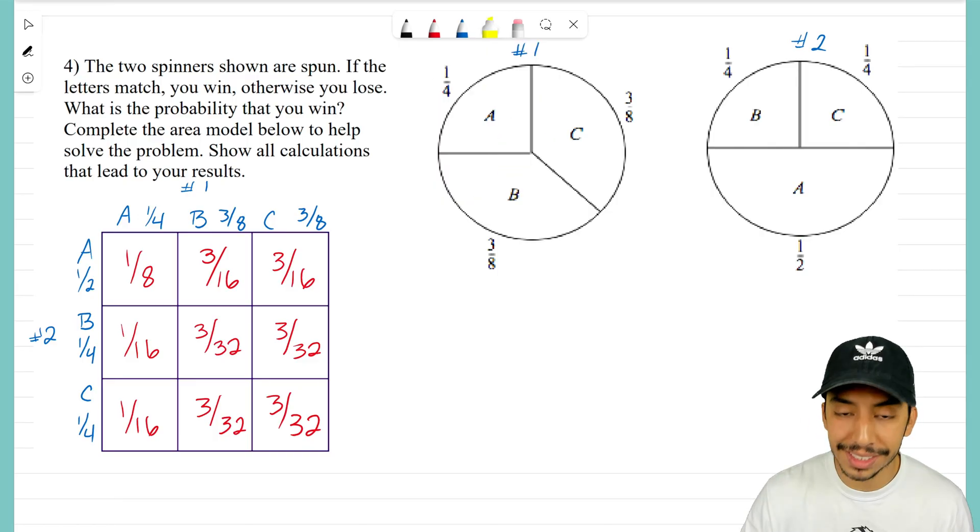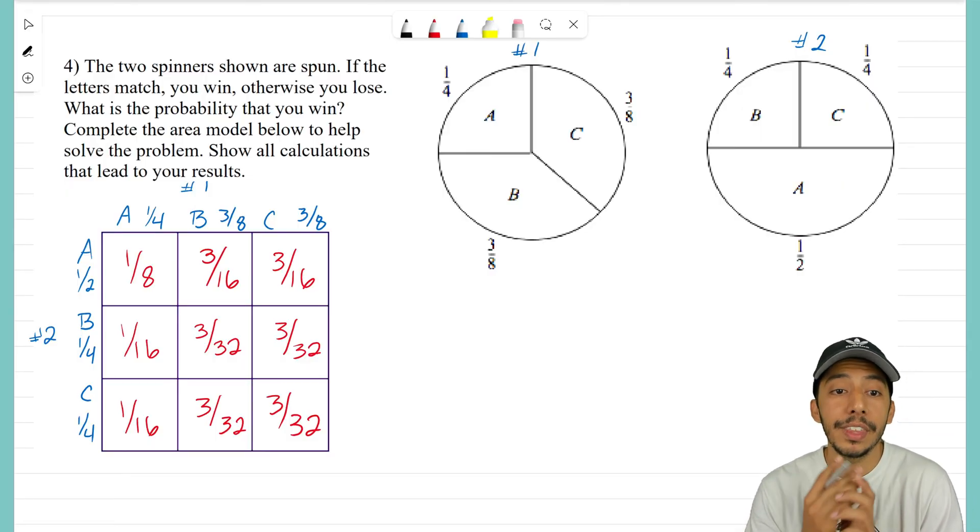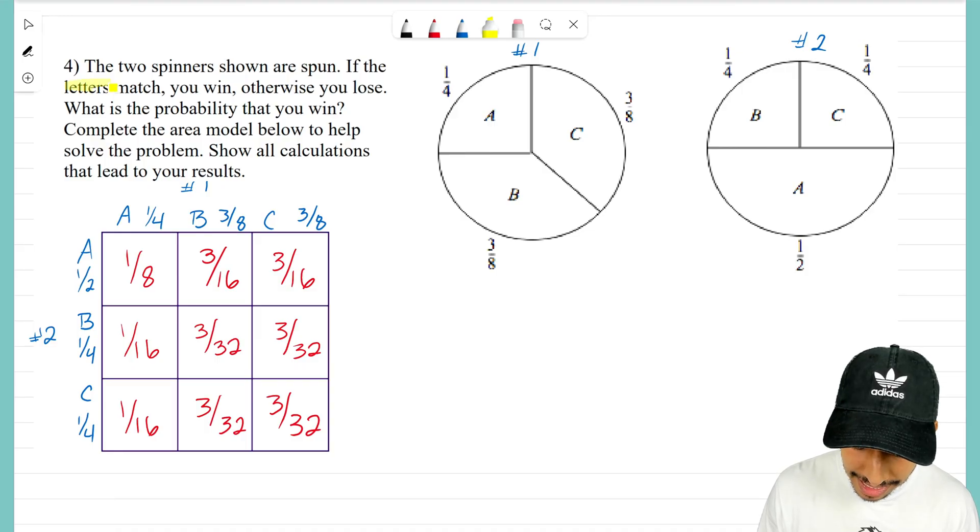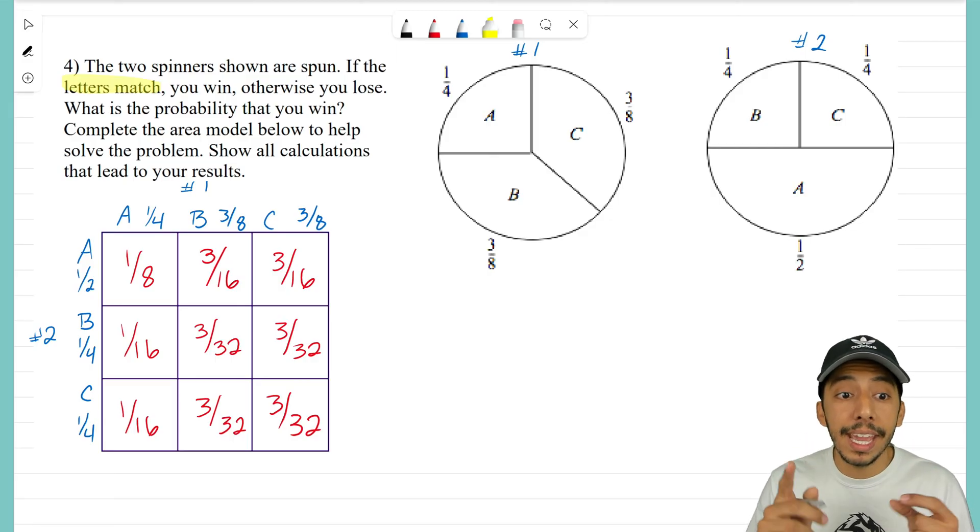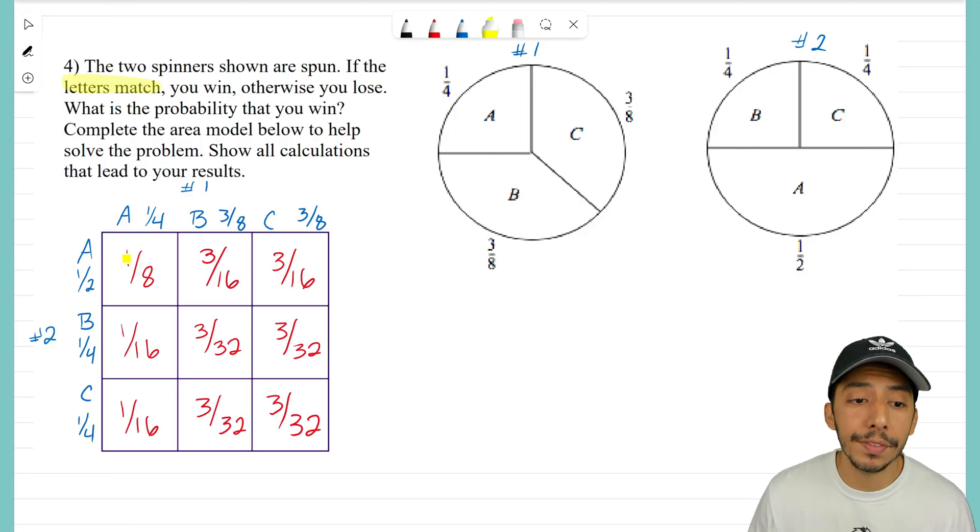The question says what's the probability that you win. Well, how do you win? You win if the letters match. So now we need to go through our area model and we need to find out all of those fractions inside—which one of them correspond with you winning the game, with your letters matching. We'll start with the top left.